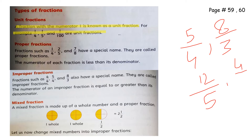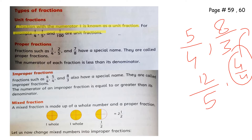If both are equal, the fraction is also improper. So: a proper fraction is when the numerator is less than the denominator, and an improper fraction is when the numerator is greater than or equal to the denominator.